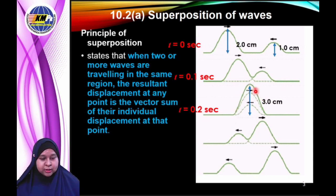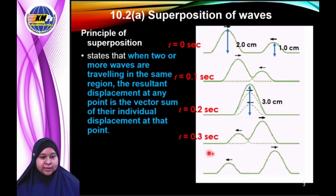This shows constructive interference. After superposition, the two waves separate again — the 1 cm wave moves to the left and the 2 cm wave moves to the right.